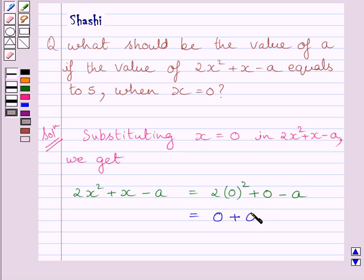Now we will write plus 0 as it is, and here we will write minus A. Now, 0 + 0 is 0 and 0 - A equals -A only.